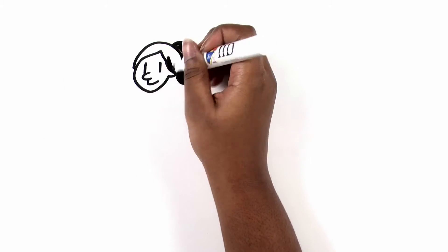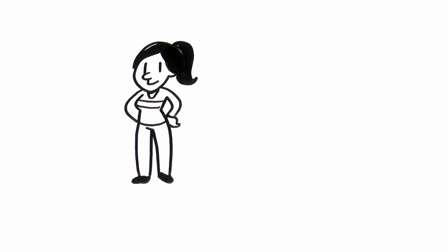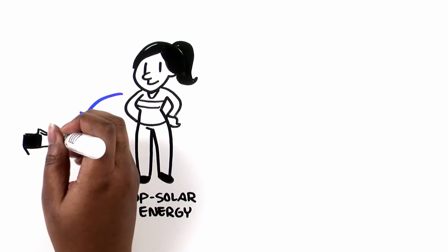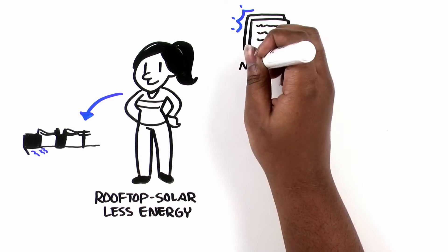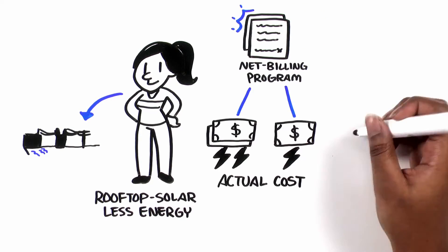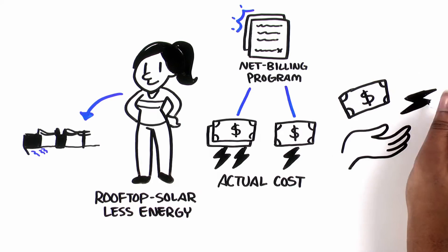While rooftop solar customers use less energy from the grid overall, they still rely on the grid for using and selling power. That's why IID created a new net billing program to ensure that everyone pays their fair share.